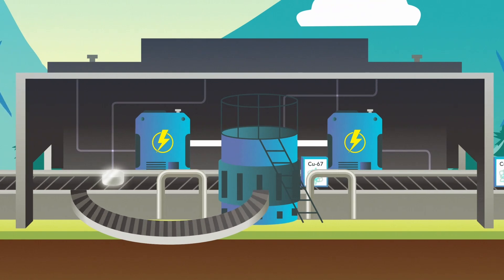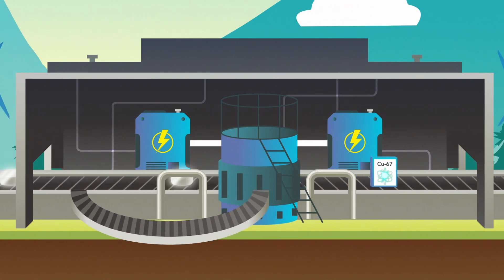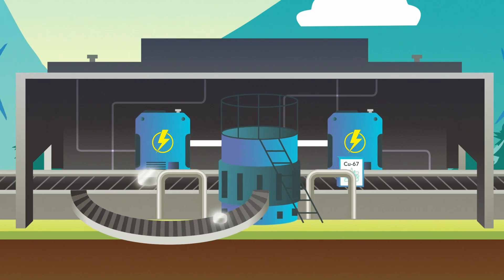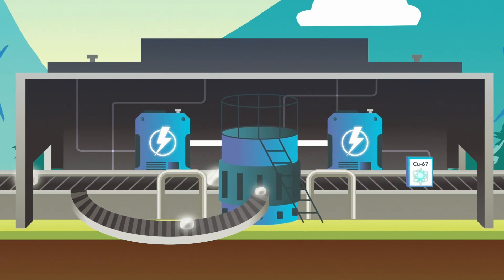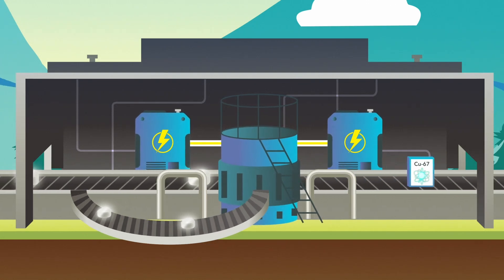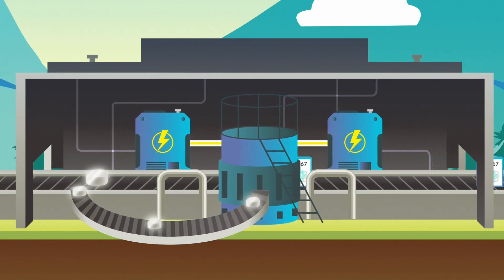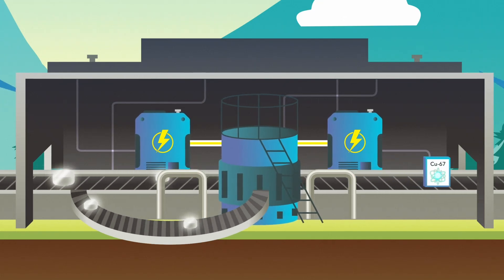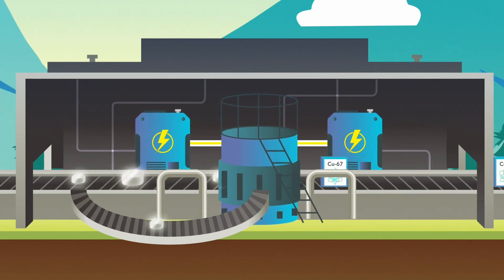Copper-67 is produced in large quantities using electron accelerators, which are relatively small machines that run entirely on electricity instead of uranium. Throughout the manufacturing process, minimal long-lasting radioactive waste is produced, and any unused zinc can be recycled and reused in future Copper-67 manufacturing, making the production process much more environmentally friendly.